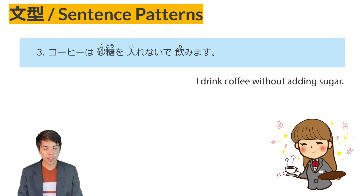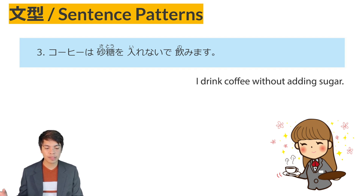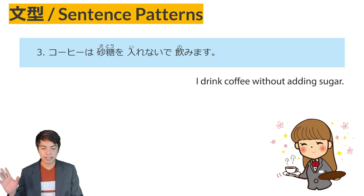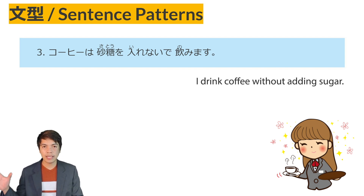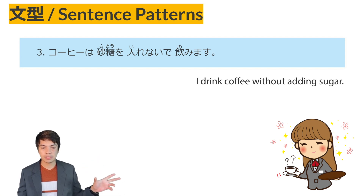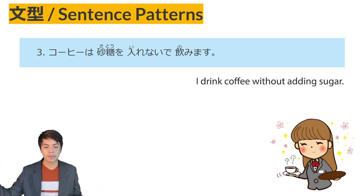In this sentence: koohii wa, coffee — sato o irenaide, from the verb iremasu meaning to put or add sugar. Naide means without adding sugar — nomimasu, I drink. I drink coffee without adding sugar.